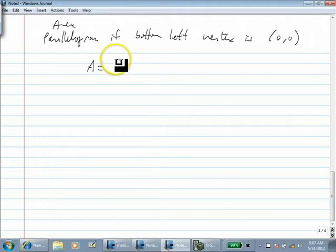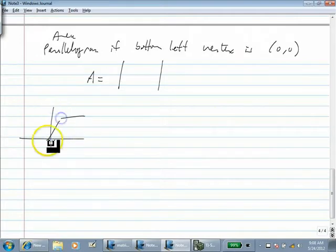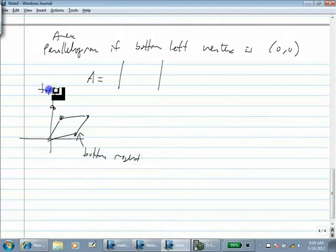The area will be the determinant of the two points. Hold on, let me say it this way. If we have a parallelogram, and if we can identify the point on the bottom right and the point on the top left corner, those are the only two points I'll need to be able to find the area.